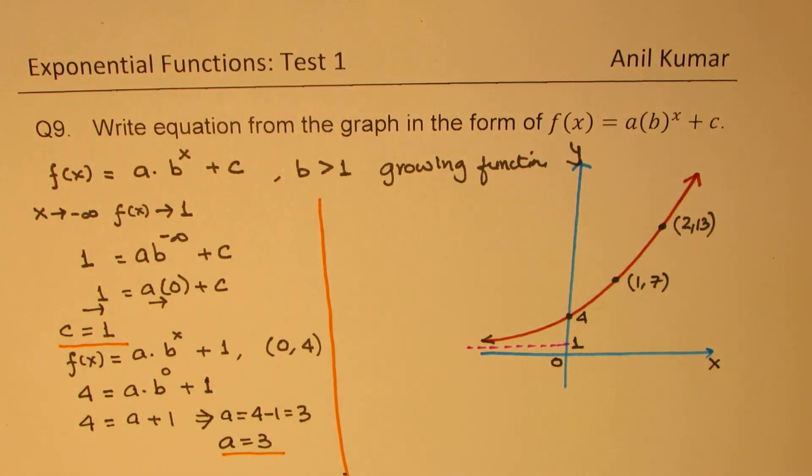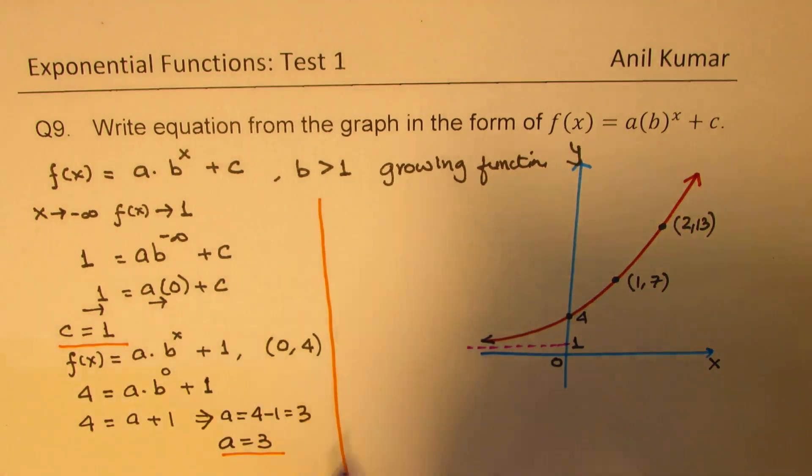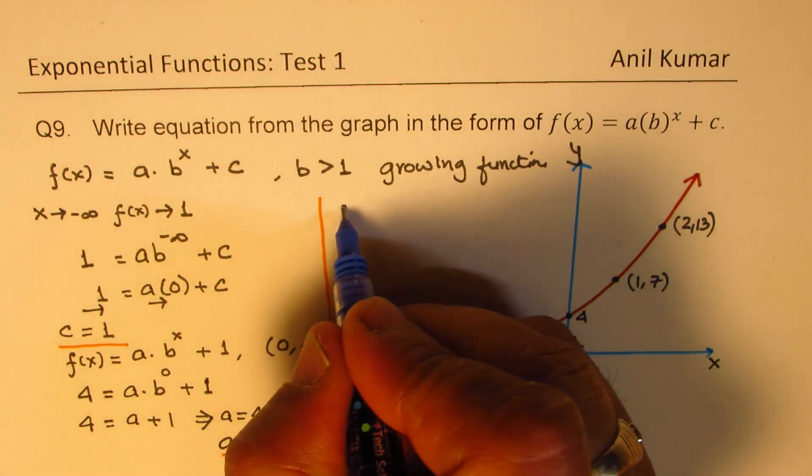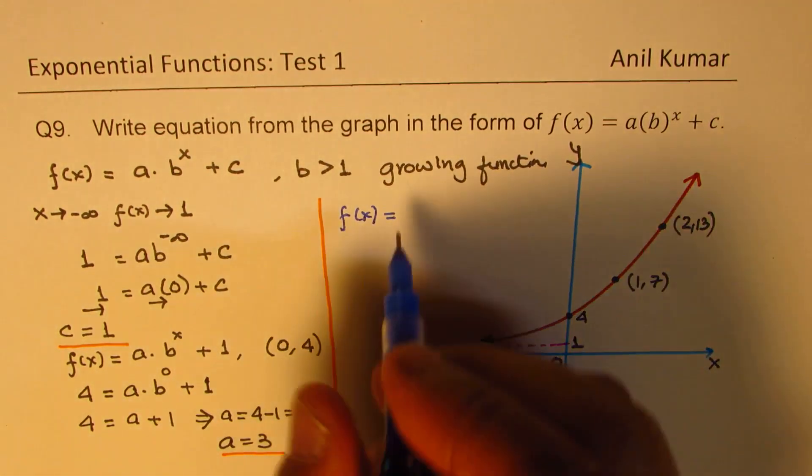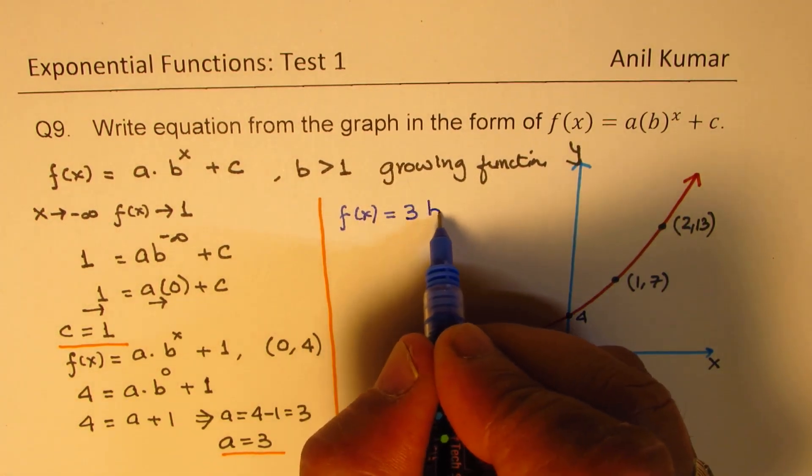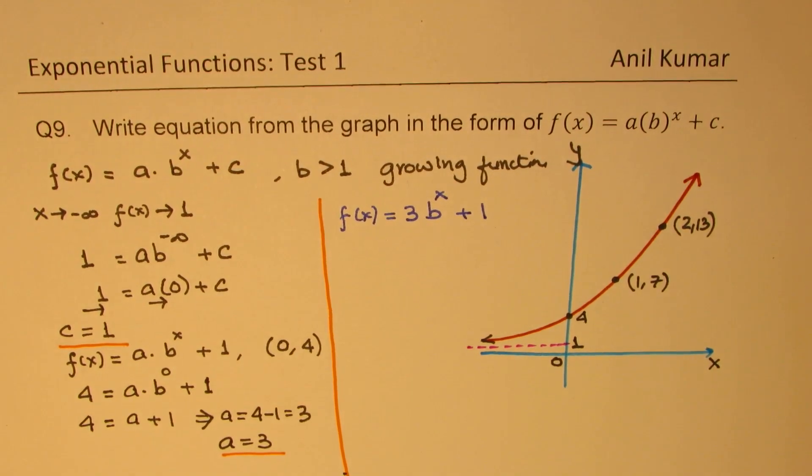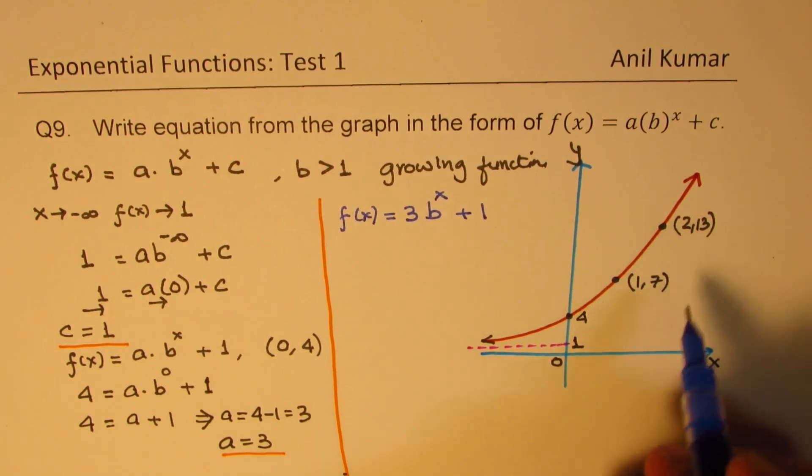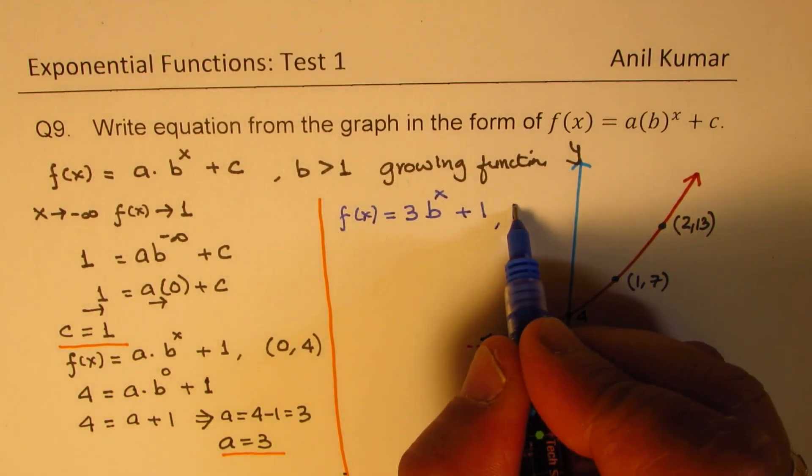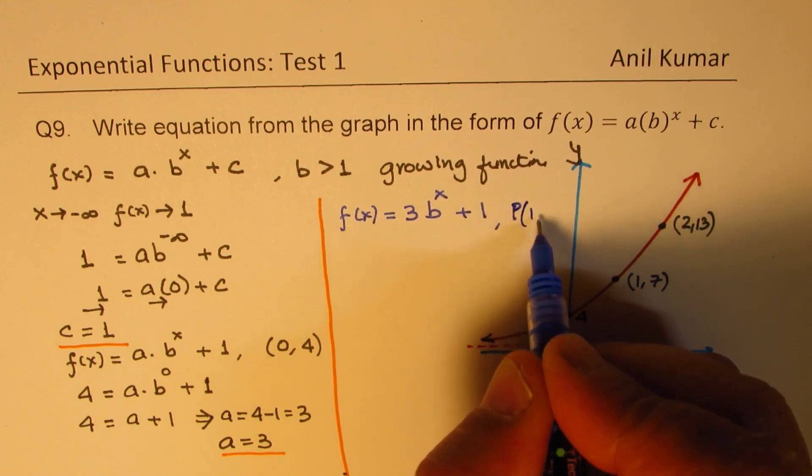Now let's continue to find the value of b. So now we have the function f(x), which we can write as 3 times b to the power of x plus 1, correct? From these two conditions. Let's use the next point, 1 and 7. So using the point, let's call this point p as 1 and 7.